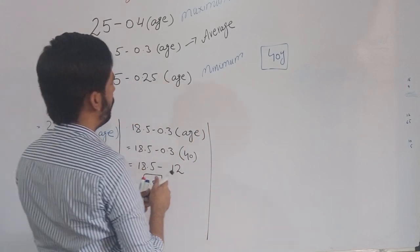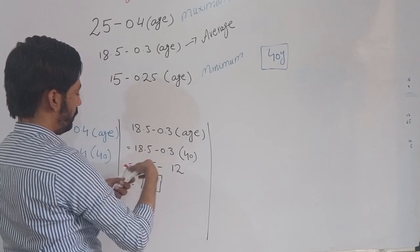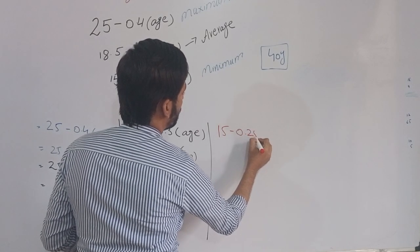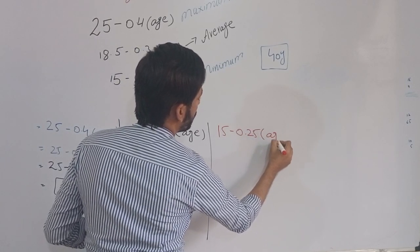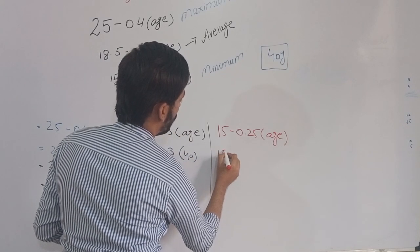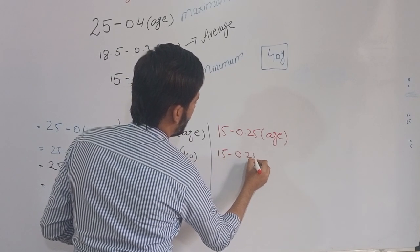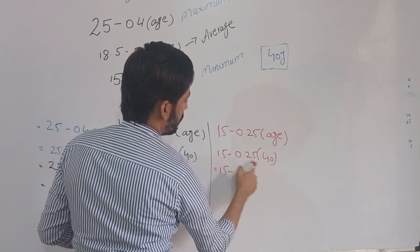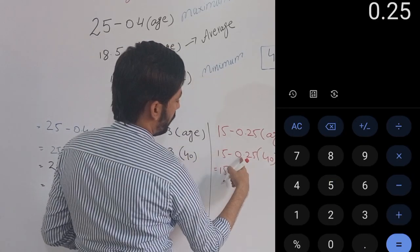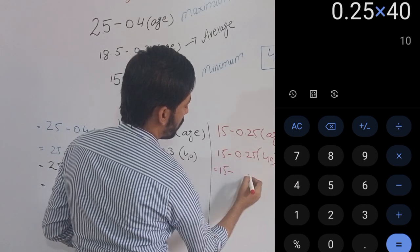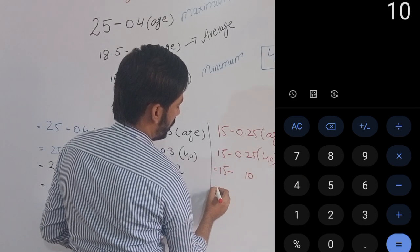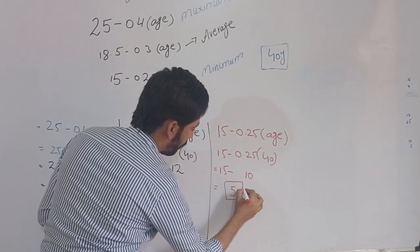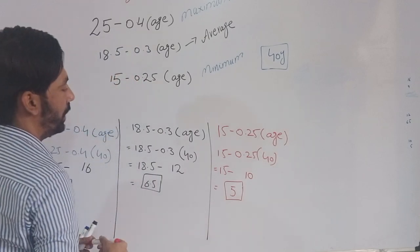For the minimum amplitude of accommodation, the formula is 15 minus 0.25 times age. Age is 40 years. Multiplying 0.25 by 40 gives 10. Subtracting 10 from 15 gives 5. So the minimum amplitude of accommodation at age 40 is 5 diopters.